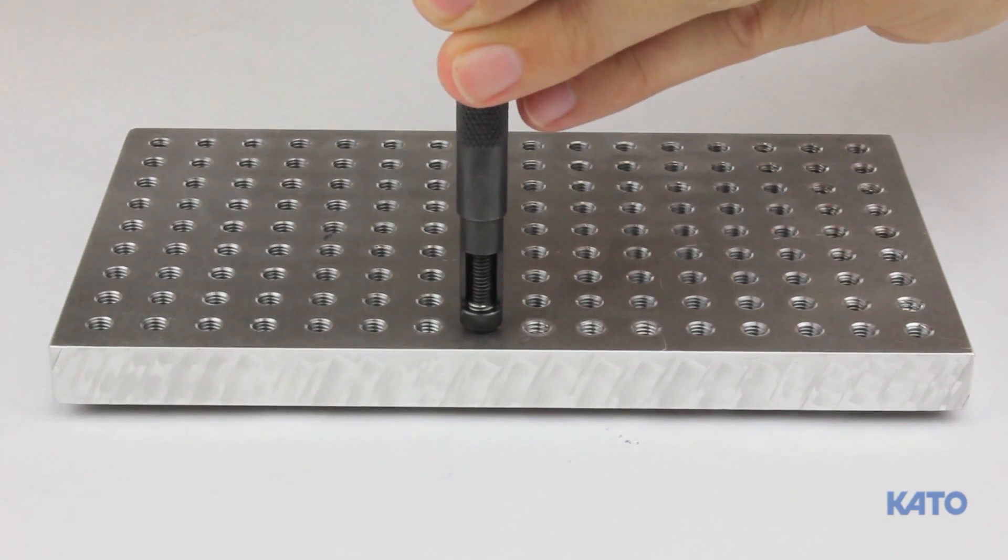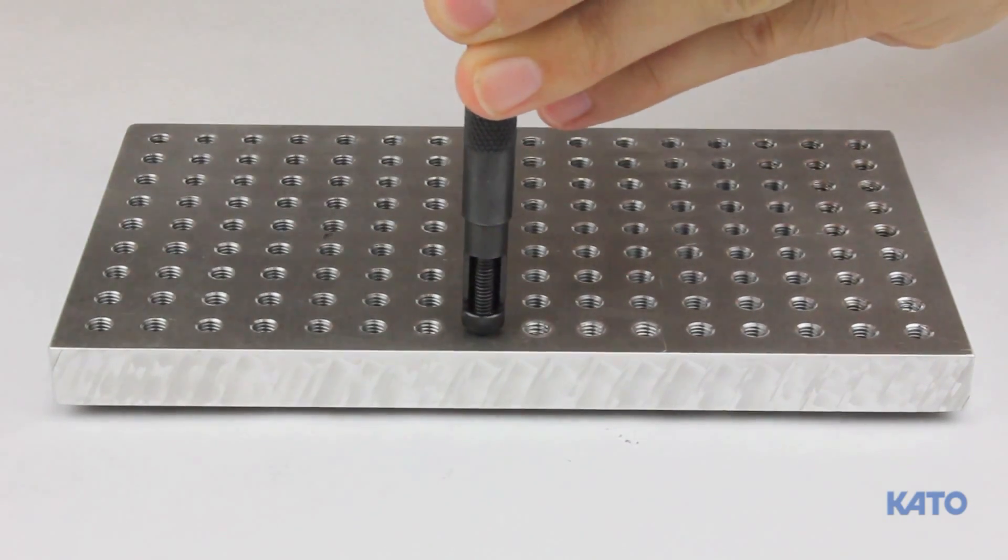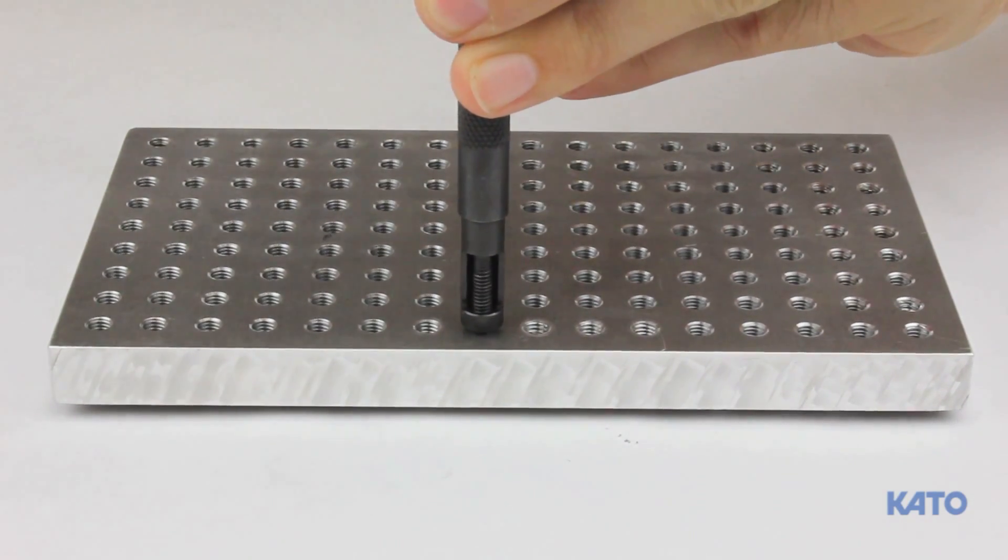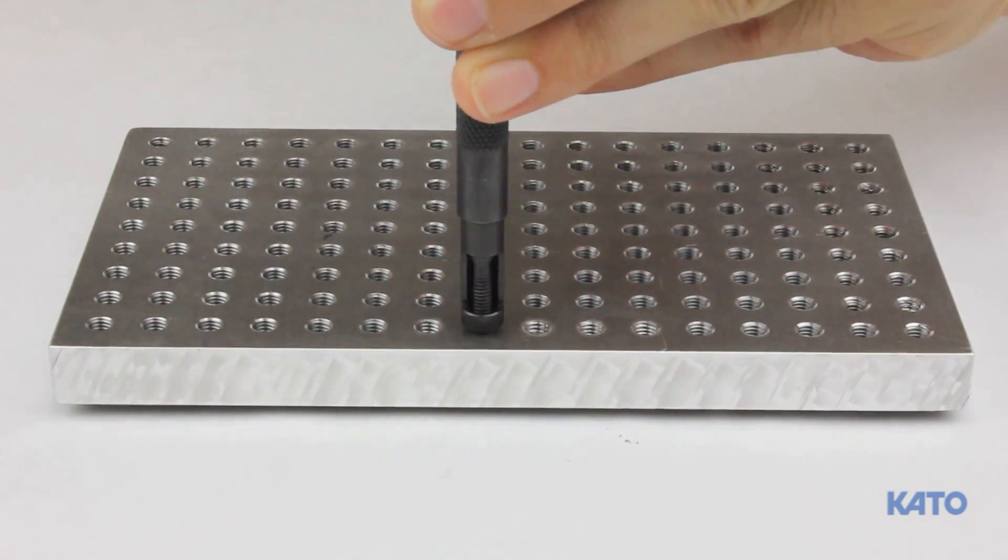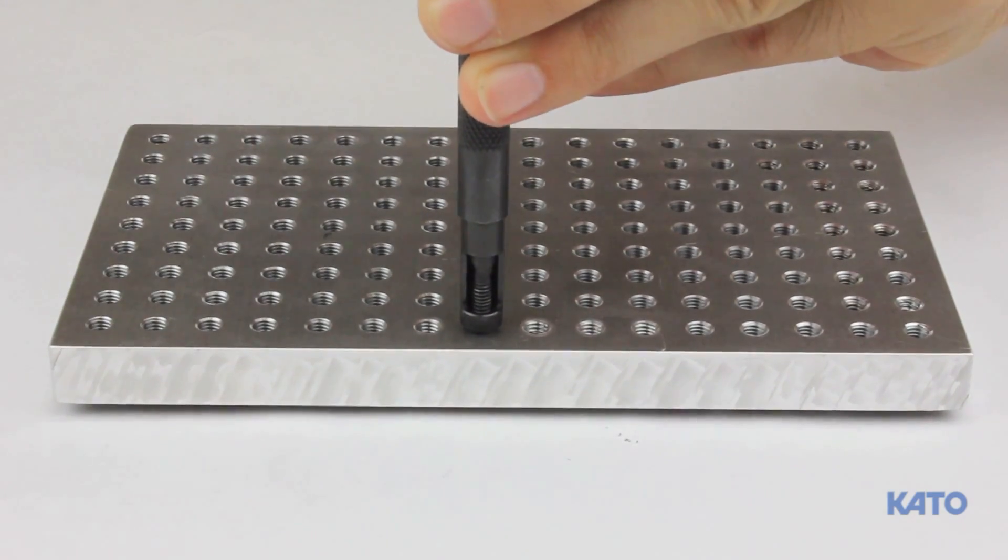As you can see, the Kato pre-winder hand tool is really easy to set up and very simple to use. It's ideal for low volume manual installation of Kato coil thread inserts.